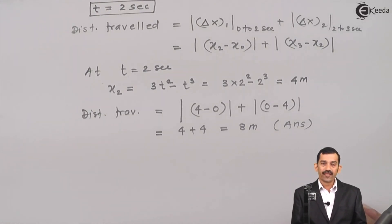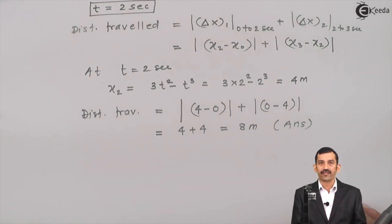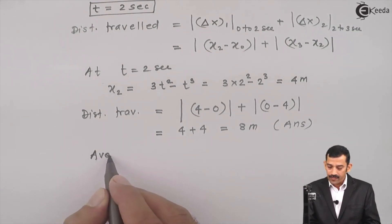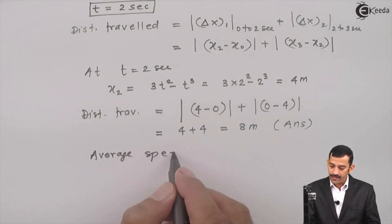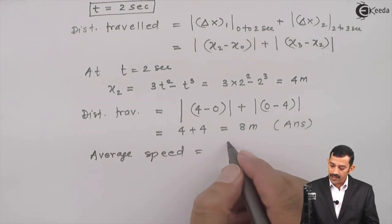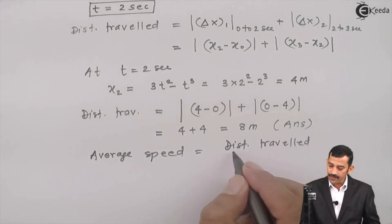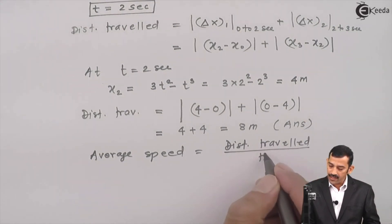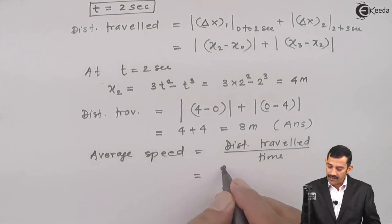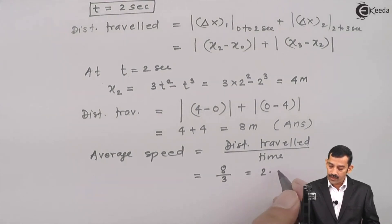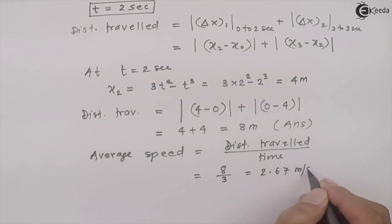For Part 3, average speed = total distance traveled divided by time interval = 8 meters divided by 3 seconds = 2.67 meters per second.